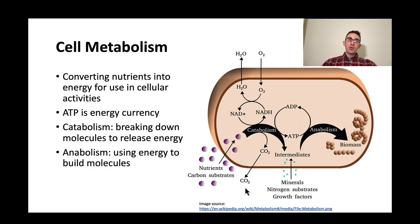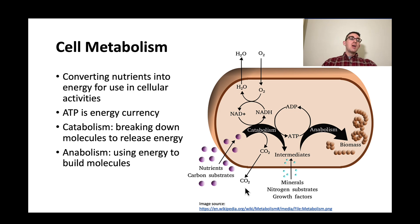Now just a couple of slides on different cellular processes — again, a quick review. Cell metabolism is converting nutrients into energy for use in cellular activities. ATP is the energy currency of the cell. Catabolism is breaking down molecules to release energy; anabolism is the opposite, using energy to build molecules. This is another thing where if you specialize in cell metabolism it would be very important, but for the purposes of this course and building a general foundation, we won't be talking too much about it.